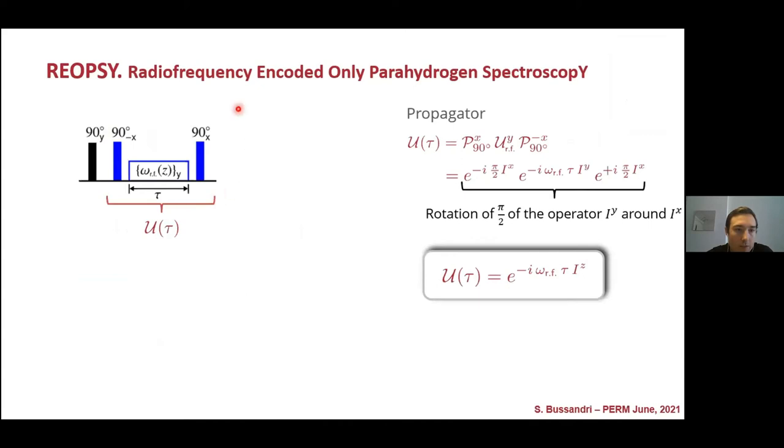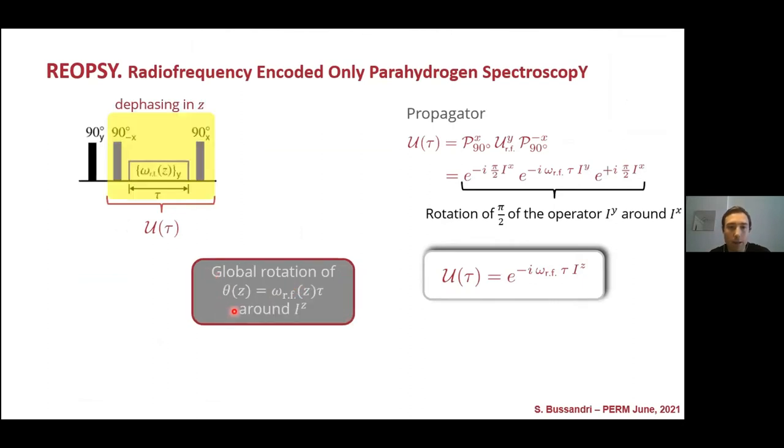Suppose we have this block here in blue, where the propagator of this block is defined by this expression. This defines a global rotation of this angle around the Z direction, but now here the omega depends linearly on the space, on this variable. So we produce a defacing of the magnetization as the gradient does.